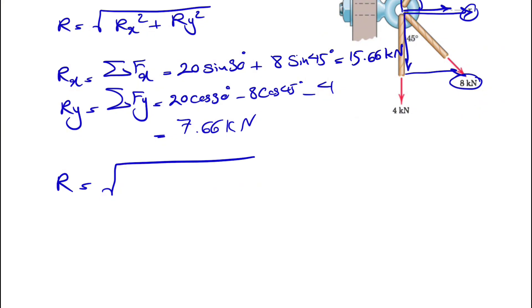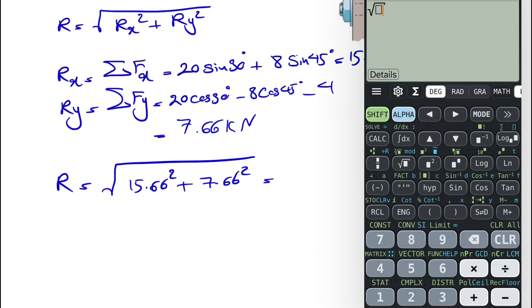Now that we have our x and y components of R, if we want to find the magnitude it's pretty easy. We have the square root of 15.66 squared plus 7.66 squared, and this is going to give us 17.43 kilonewton as the magnitude.